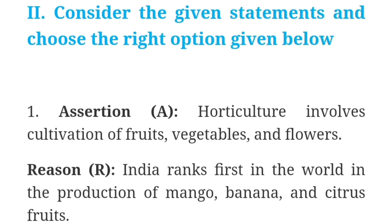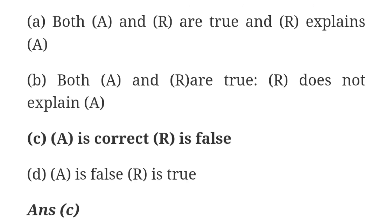Roman numeral II — Consider the given statement and choose the right option. Statement 1: Horticulture involves cultivation of fruits, vegetables and flowers. Statement 2: India ranked first in the world in the production of mango, banana and citrus fruits. Answer: Option C — Statement 1 is correct, Statement 2 is false.